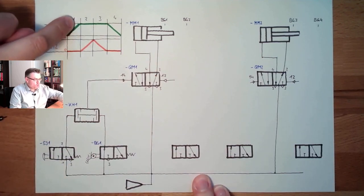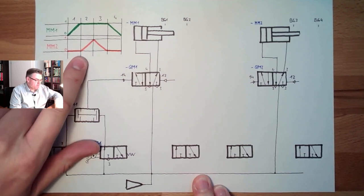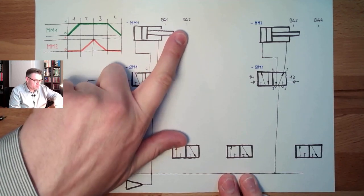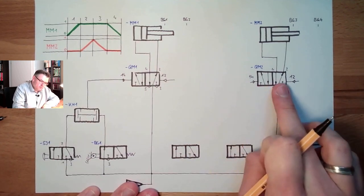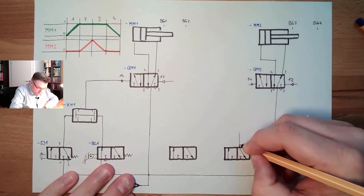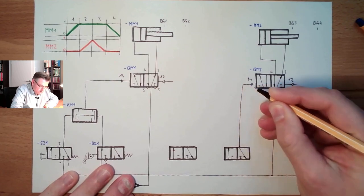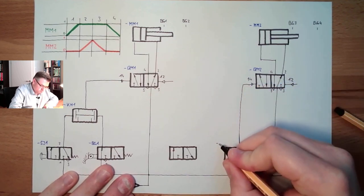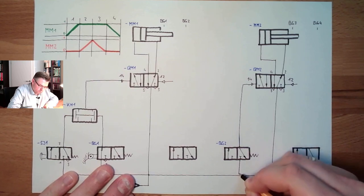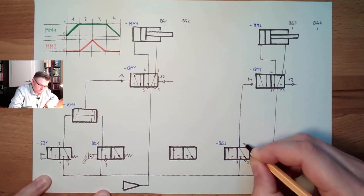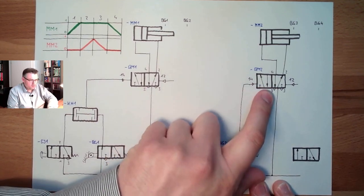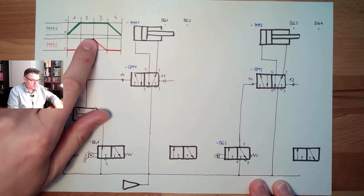If this is traveling now outside, what is the next thing which shall happen? Here, MM2 shall travel outwards. So if BG2 is getting touched, then this must shift. So here, this one, blue. This one shall be BG2. And when this is pressed, we shall apply pressure. We shall apply pressure to here, this is switching, and MM2 is traveling outwards. Good.